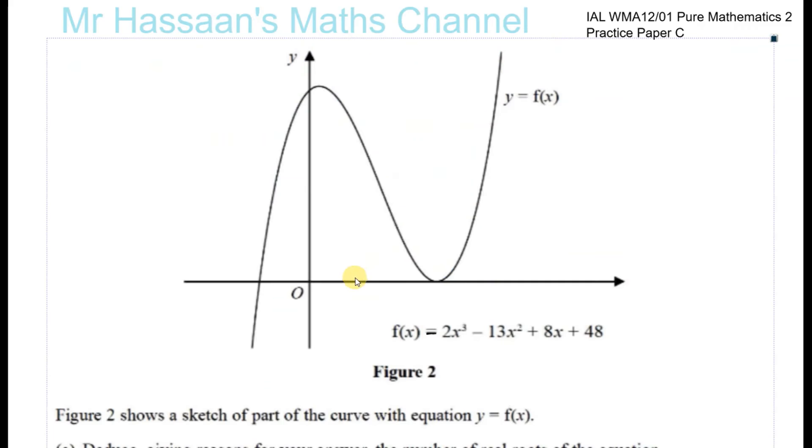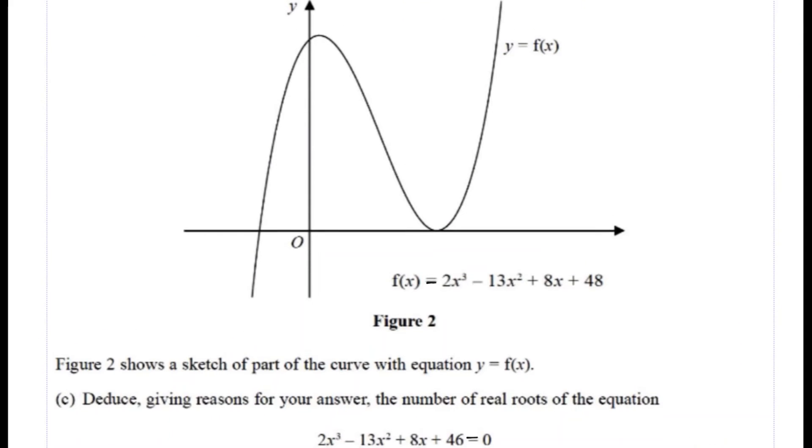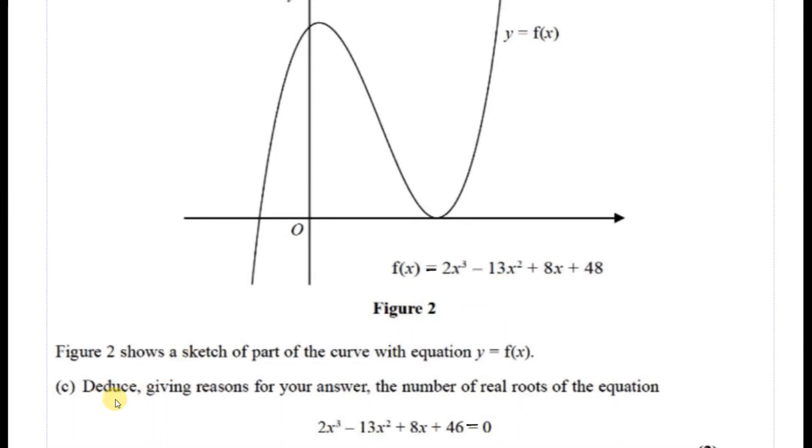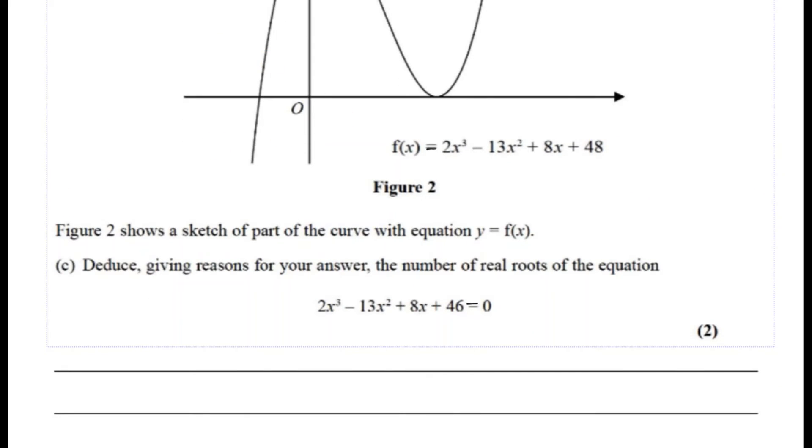Let's go to part C. Part C says, figure 2 shows a sketch of a part of the curve with the equation y equals f(x). Deduce, giving reasons for your answer, the number of real roots of the equation 2x³ - 13x² + 8x + 46. Now let's compare these two with each other. When I compare this with that, you can see that they're almost the same except for this part here. This is the difference. The difference is in this part.